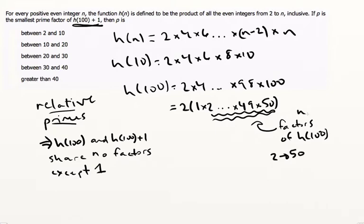So the factors of h(100) that are not 1 would be the numbers 2 to 50.